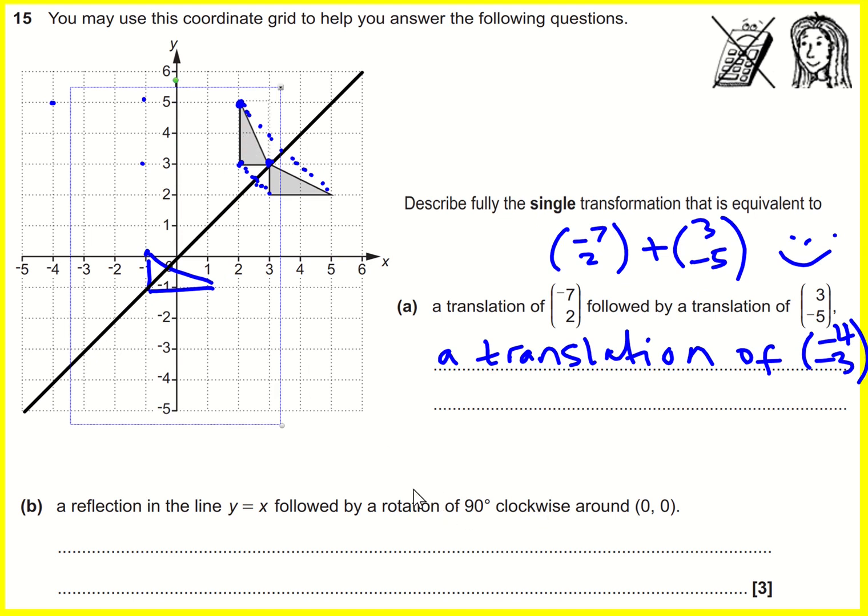A rotation of 90 degrees clockwise, about zero, zero. So, for this, you would use tracing paper, and you would put your tracing paper over this triangle, and draw it, and then put your pencil on zero, zero, use that as a pivot point, basically the center of rotation.